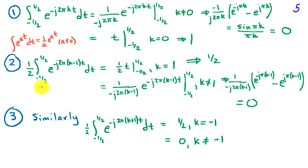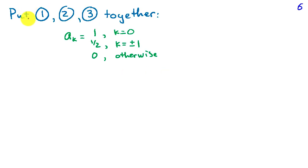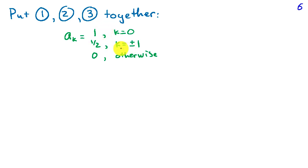The third integral follows almost identical steps, but with k plus 1 instead of k minus 1. It gives 1/2 when k equals minus 1, and 0 when k is not equal to minus 1. Putting the three terms together, the Fourier series coefficients are: a_k equals 1 when k equals 0 (from the first integral, multiplied by the (1/2) prefactor gives 1/2 — wait, actually a_0 equals 1), a_1 equals 1/2, a_{-1} equals 1/2, and a_k equals 0 otherwise.